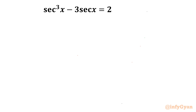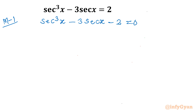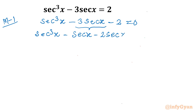Let's get started with Method 1, the factorization method. I will begin by rewriting the equation as sec³x − 3 sec x − 2 = 0. Now I will split the −3 sec x term: sec³x − sec x − 2 sec x − 2 sec x.